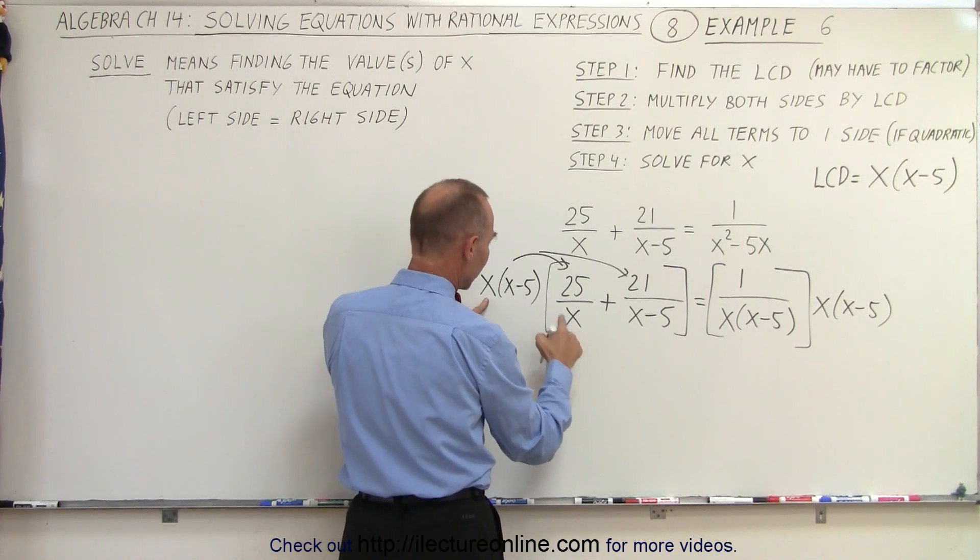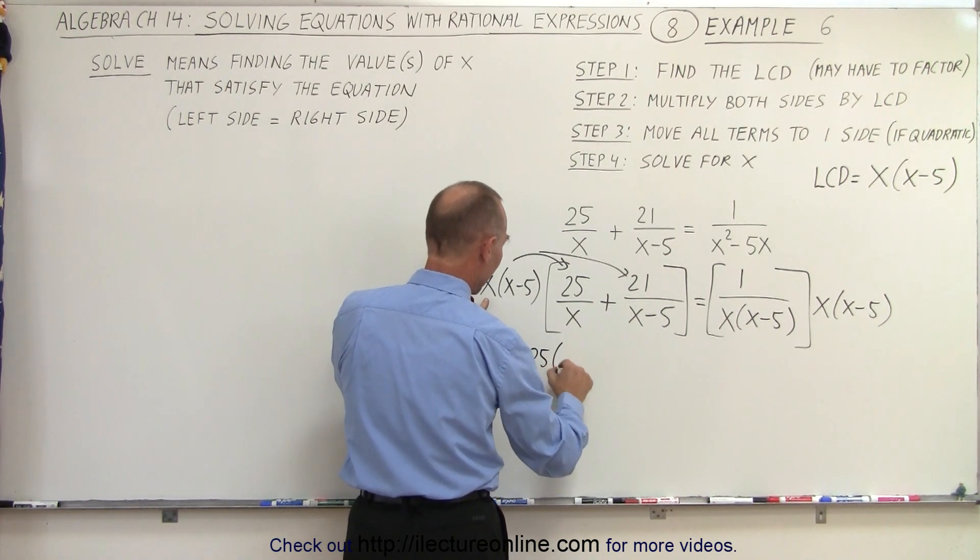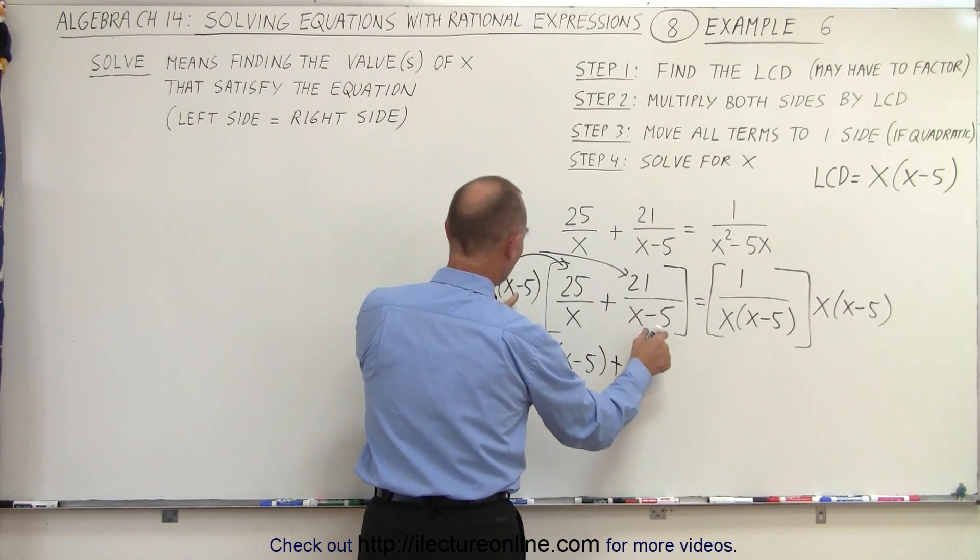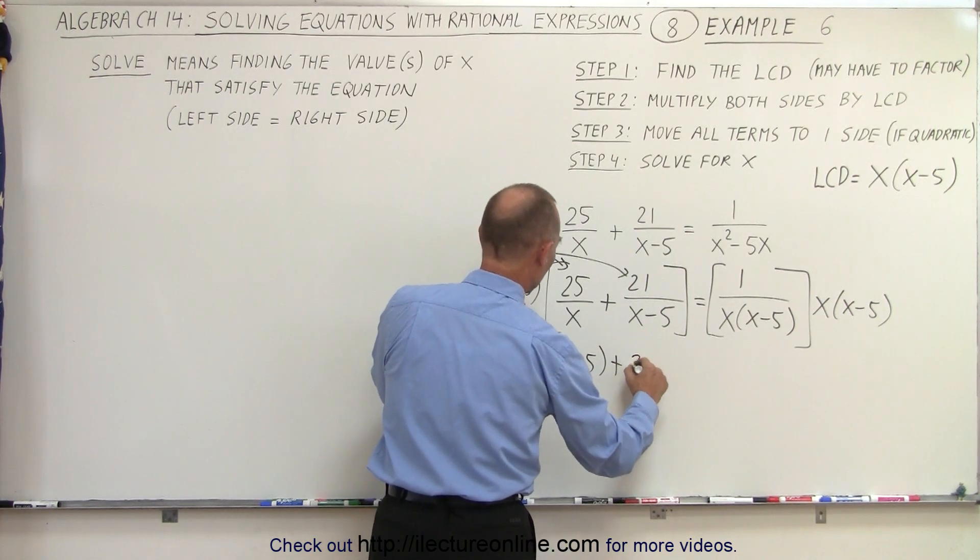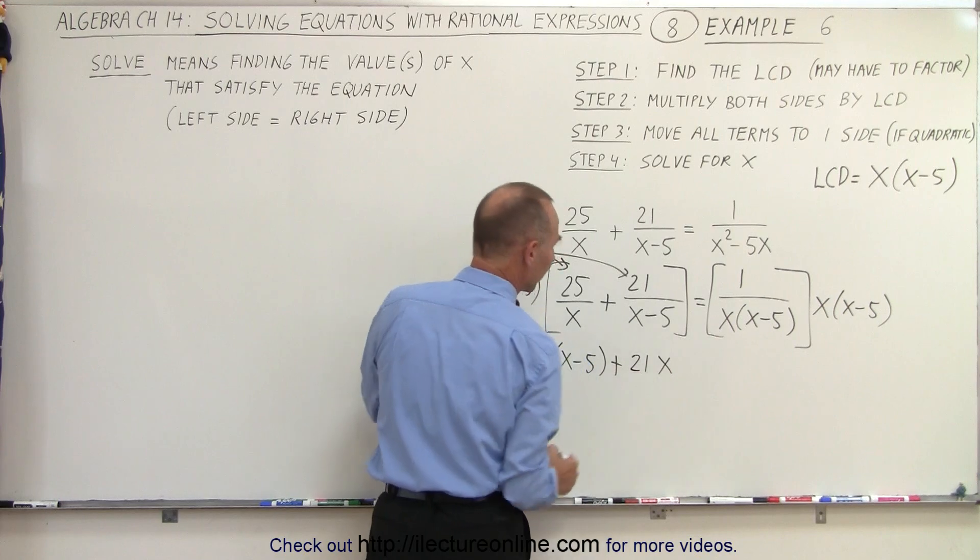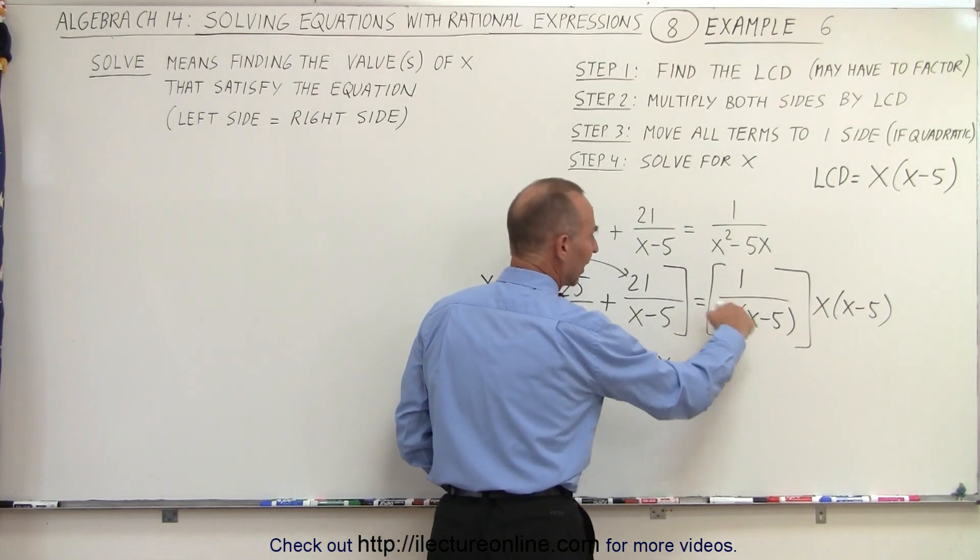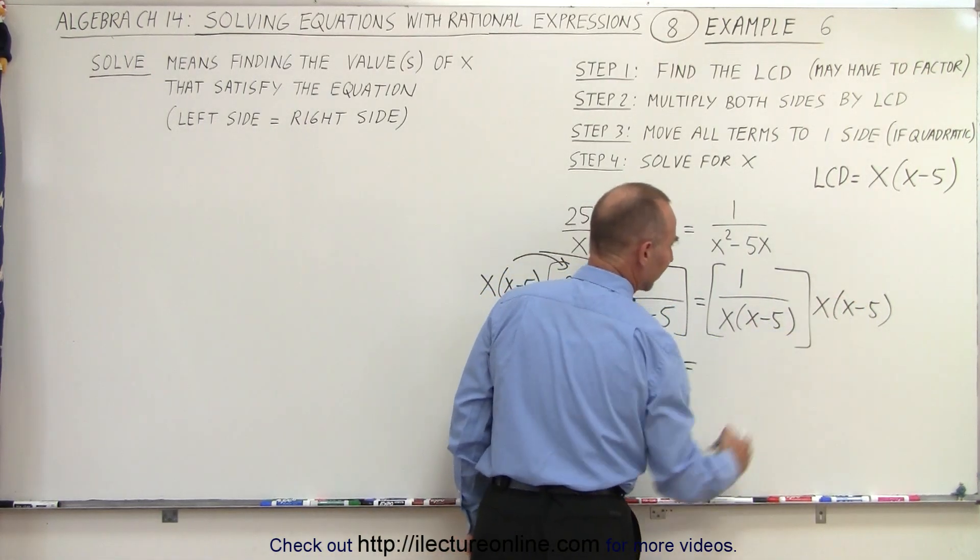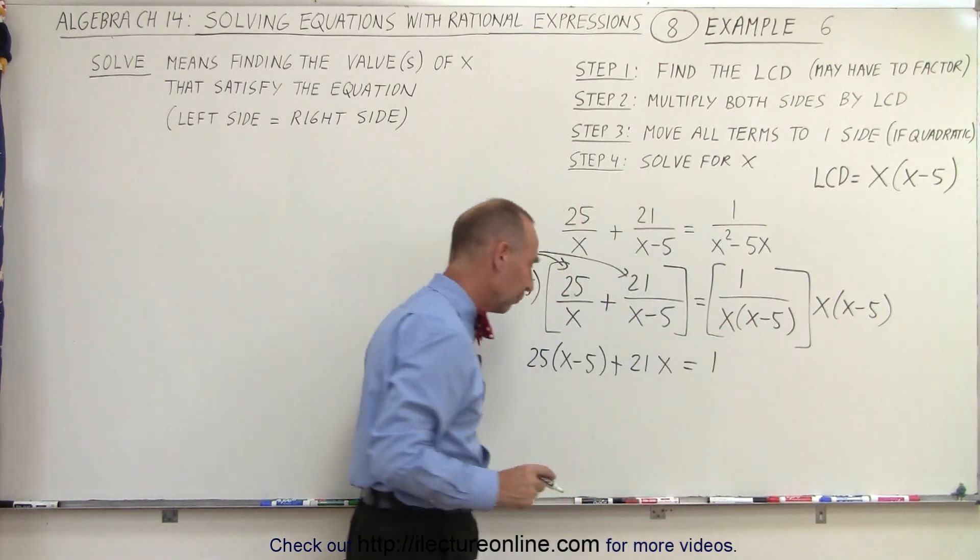Here you can see that the x's cancel out and you're left with 25 times x minus 5, plus here the x minus 5's will cancel out and you're left with 21 times x. On the right side, x times x minus 5 cancels out with x times x minus 5 and you're simply left with 1.